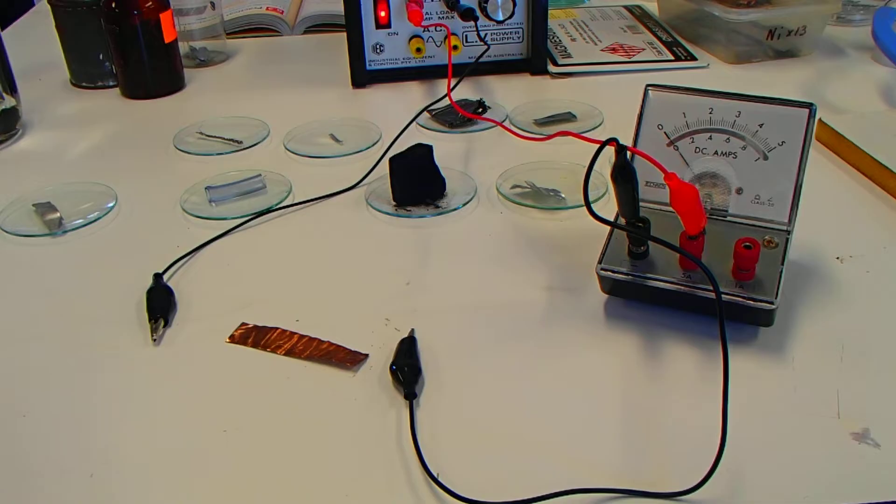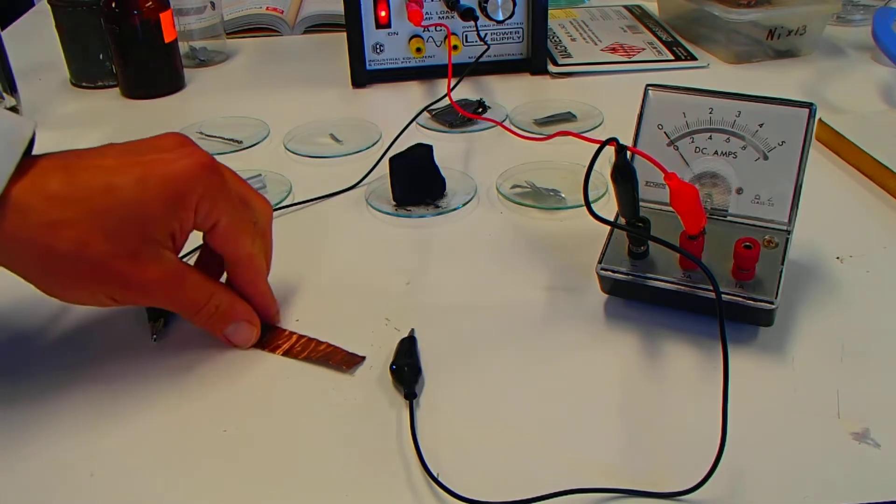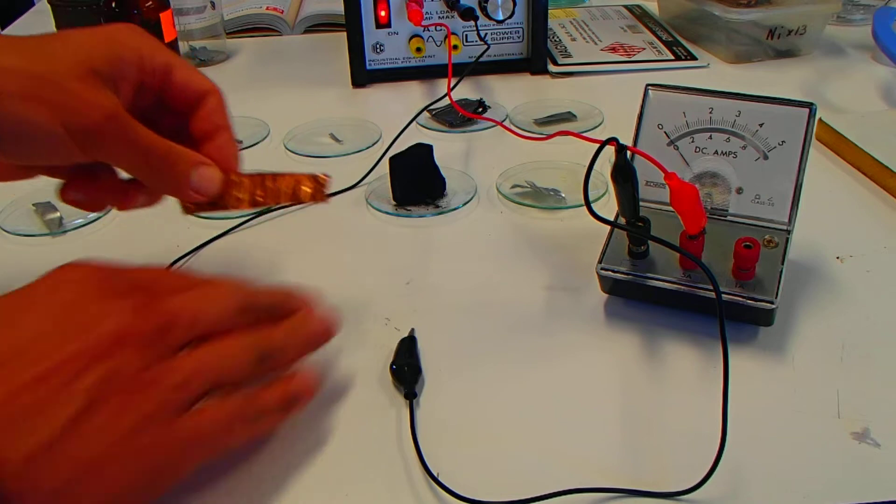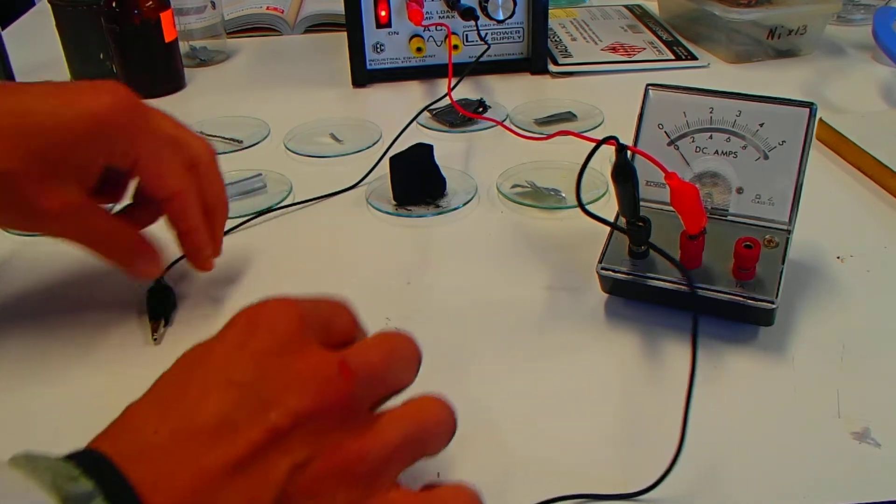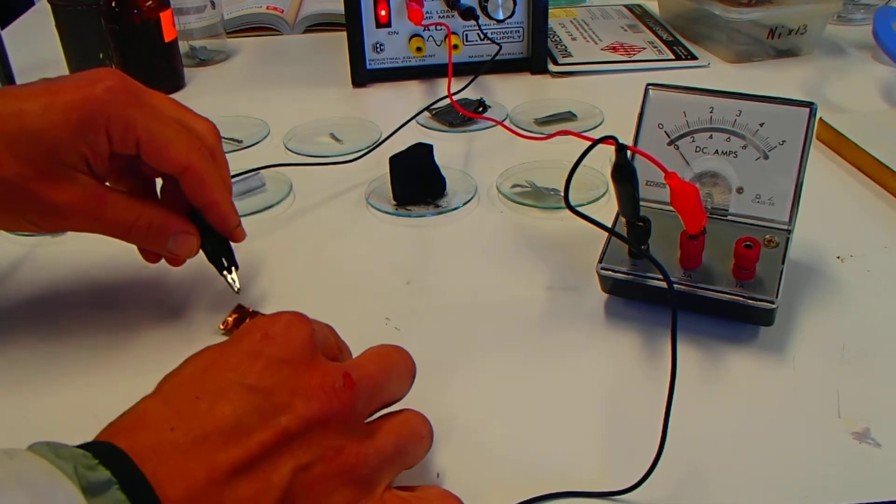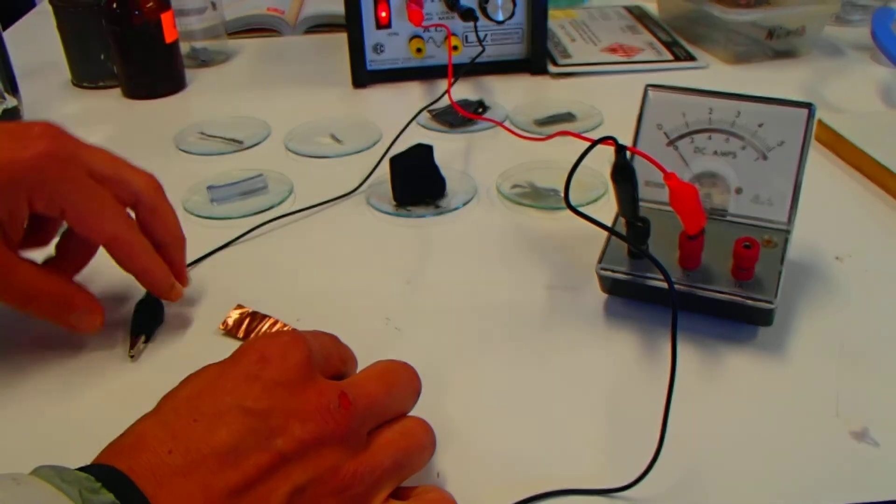It'll show us if there's any current being passed through the sample. I've just got a little bit of copper here to illustrate how it works. And you can see that when I place the two electrodes on copper, we should see a current being passed through.